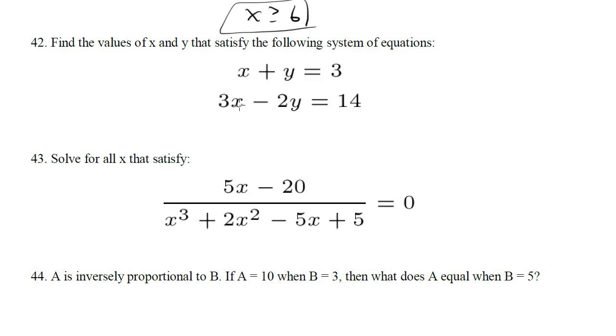So I see that I've got a negative 2y here and a positive y here, so I'm going to multiply the top by 2, so we get 2x, 2y, and 6. Because now when I stack and add, I'm going to get some cancellations.